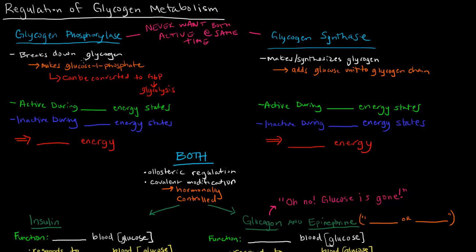Glycogen phosphorylase breaks down glycogen, frees up glucose which goes to glycolysis so that we can make energy. This would be active during low energy states — when we want to make energy — and inactive during high energy states. Glycogen synthase is the opposite: it would be active during high energy states when we have plenty of glucose and want to store it, and inactive during low energy states.